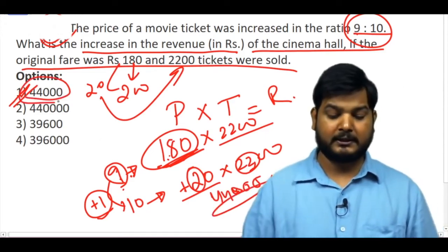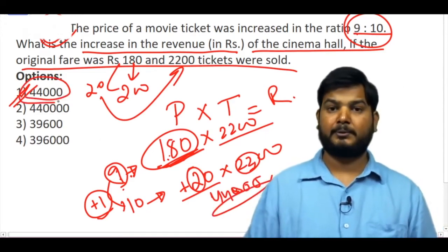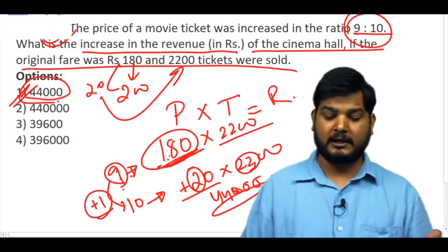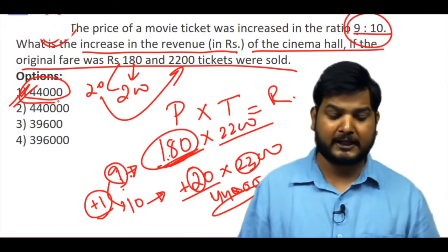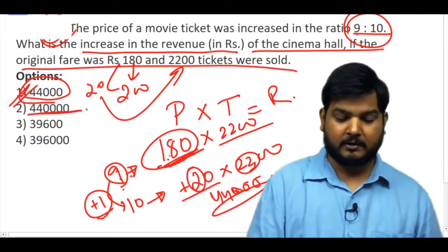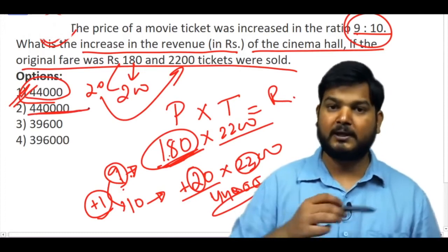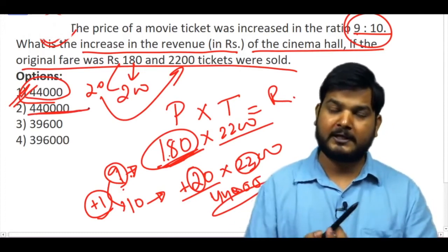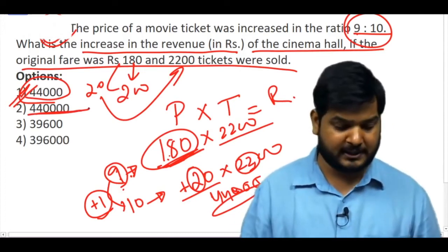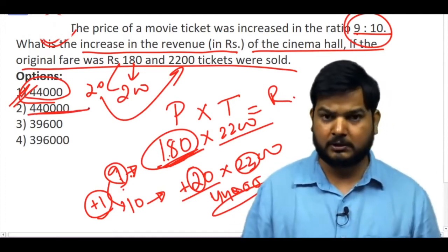In the exam, be careful — the question asks for the increase in revenue, not the total revenue. If they ask for the total revenue, then you multiply the new fare by 2200. But here, the increase in revenue is what is required, which is Rs. 44,000.